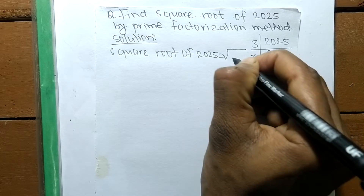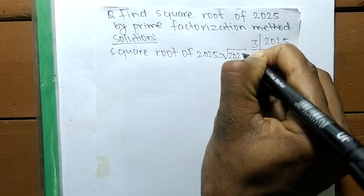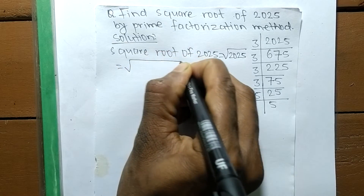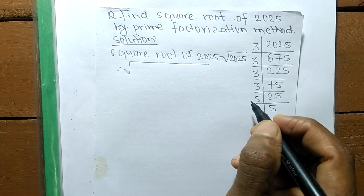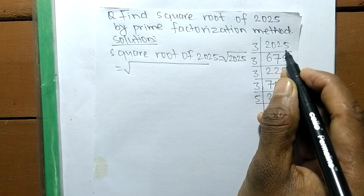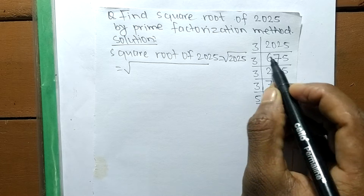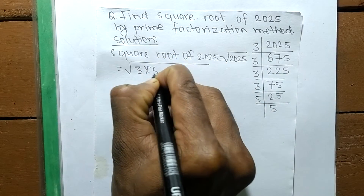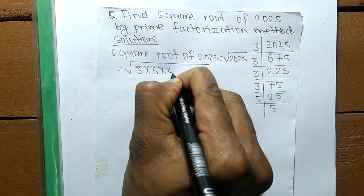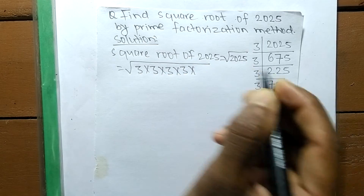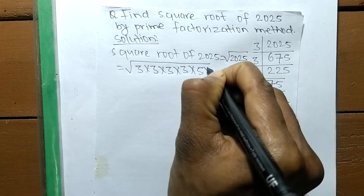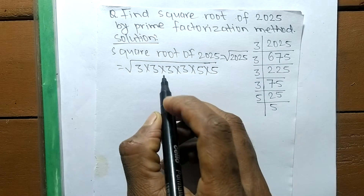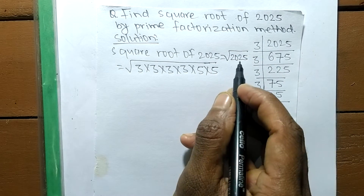This sign is the sign of a square root — the square root of 2025. Now we write down the prime factors of 2025: 3 times 3 times 3 times 3, and 5 times 5.